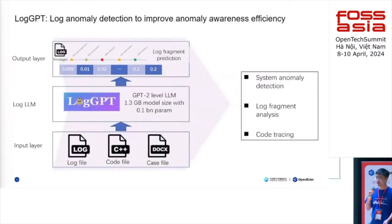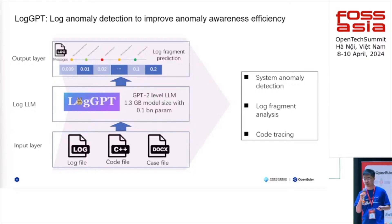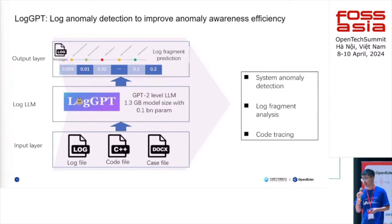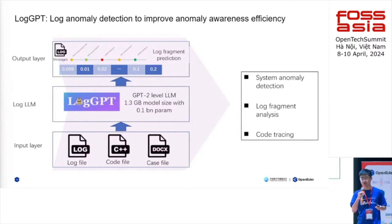We have a future plan to combine GPT with AOPS. We have chosen a model called LogGPT to help us predict the next line of a log so that we can compare the predicted log with the actual log to see if anything went wrong. We can give the model the log file — like the messages file and the case file of the maintenance work — and it will help us detect anything abnormal in the log, without needing specific rules.